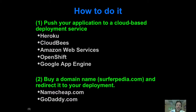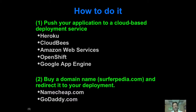One is you pick a cloud-based deployment service — and there's a bunch of them out there. I'm listing some of the most popular ones: Heroku, which most of you have probably heard of; CloudBees, lesser known than Heroku but with really nice support for Play, so we're going to use CloudBees in this class; then there's Amazon Web Services, OpenShift, Google App Engine. The idea is that these are places on the web that will run your code for you — you deploy your code to this service and it will run your application for you.